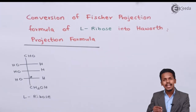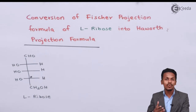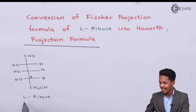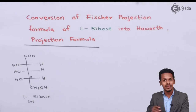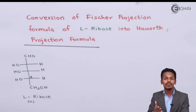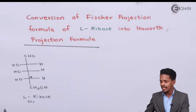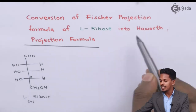It has been found that L-ribose is dextrorotatory, and that is the reason it is also known as L(+) ribose. The plus indicates dextrorotatory, and if it were minus it would be called levorotatory. So this is basically the L(+) ribose, and we have to convert it into the Haworth projection formula.